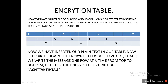Now we've inserted our plaintext in the encryption table. We write down the encrypted text one row at a time from top to bottom. The encrypted text will be: A, C, N, T — that's the first row. Then T, T, A, K, T — that's the second row. Then I, H, T, A, G — that's the third row. So the complete encrypted text is: ACNT-TTAKT-IHTAG, or written out: A-C-N-T-T-T-A-K-T-I-H-T-A-G.